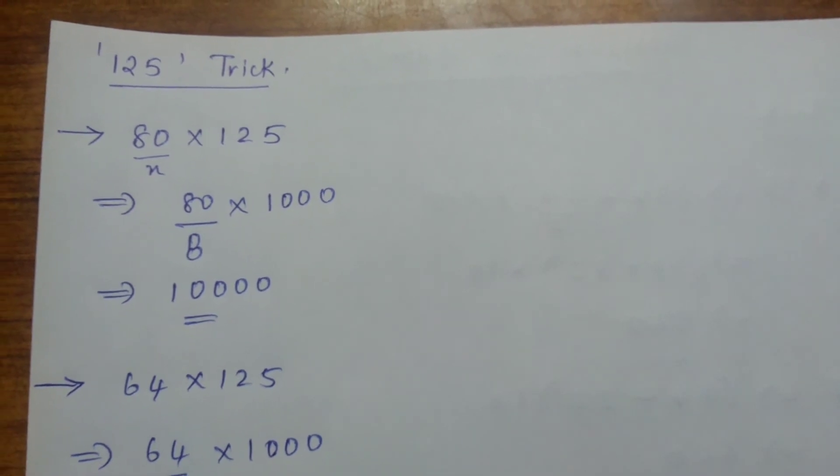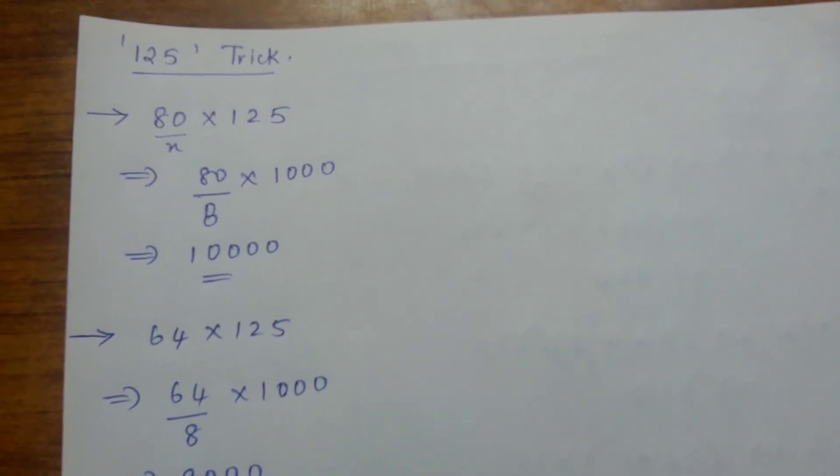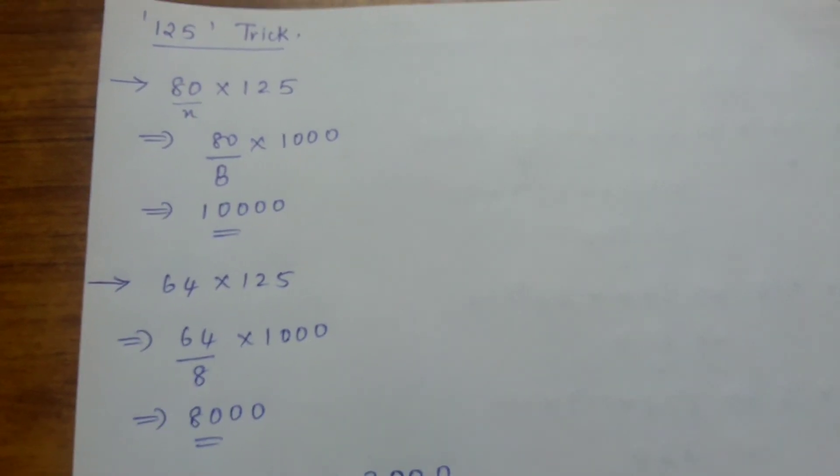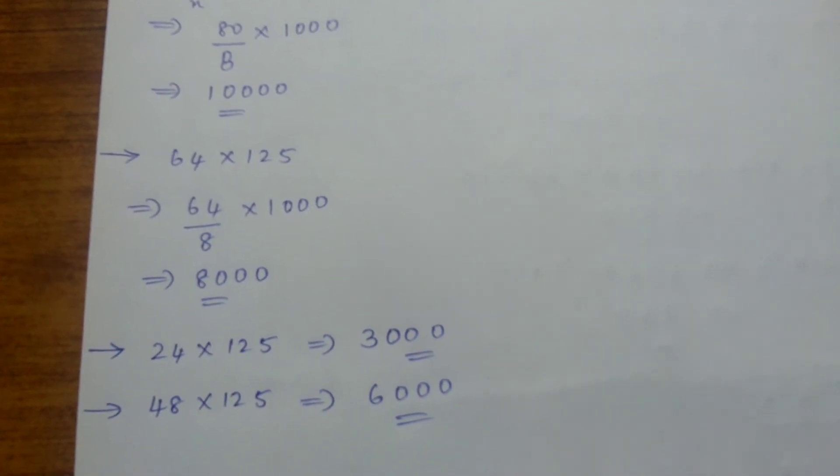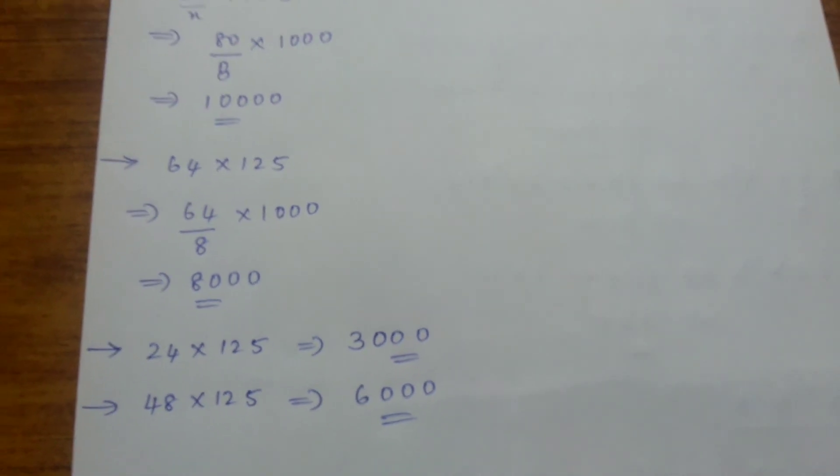64 into 125: divide the left side digit by 8, that is 64 by 8 is 8, 3 zeros, 8000. 24 into 125: 24 by 8 is 3, 3 zeros, 3000. 48 divided by 8 is 6, 3 zeros, 6000.